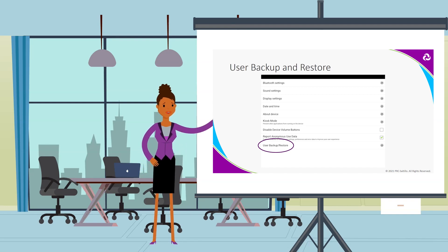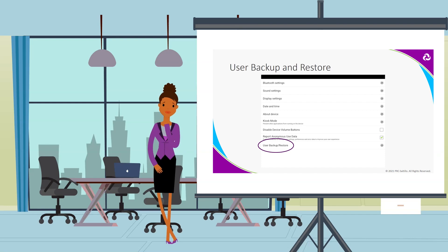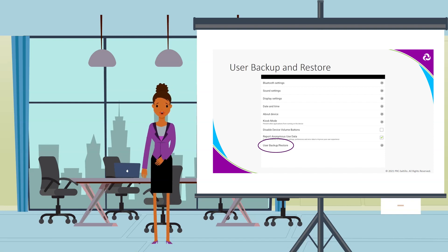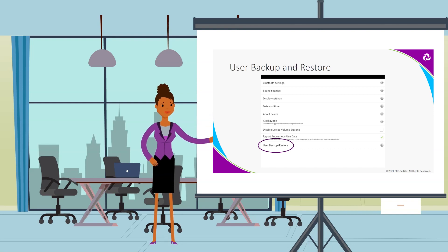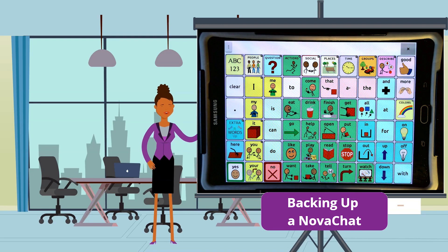Once you back up these settings to a USB, you can transfer the settings to a new NovaChat or use it to restore a NovaChat. For example, if you are trialing a NovaChat and have created a customized vocabulary, added pronunciations, set up button timing, and created profiles, you can transfer all that work to your personal NovaChat using the user backup and restore feature. Let's take a look at how to backup and restore your NovaChat.